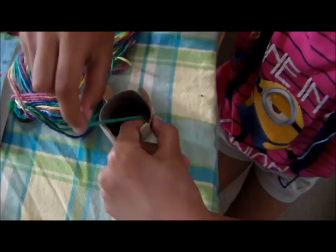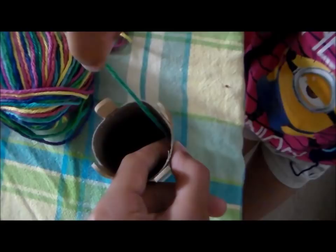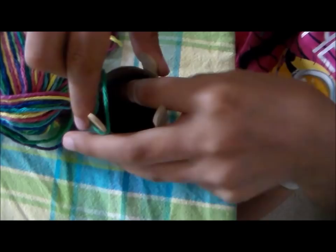You're going to take the other side and wrap it around the first popsicle stick just like so, and again on the other side. And you'll be wrapping the yarn around each popsicle stick all the way around.